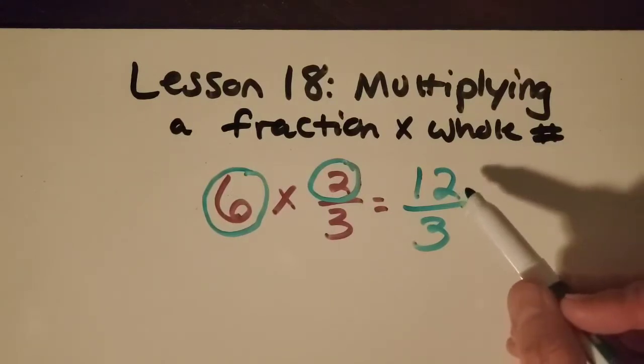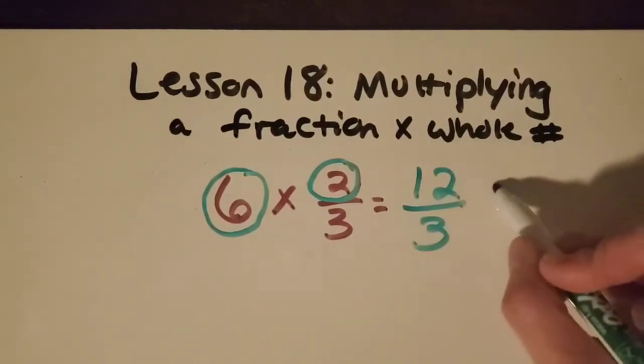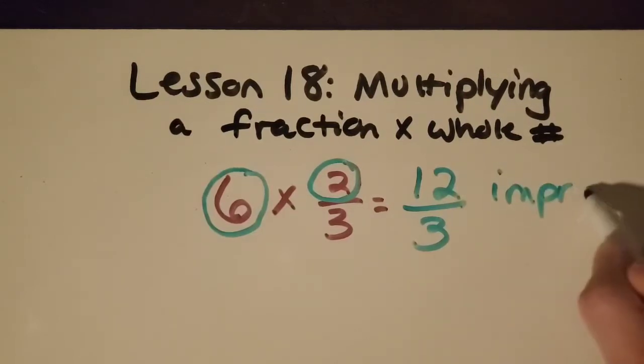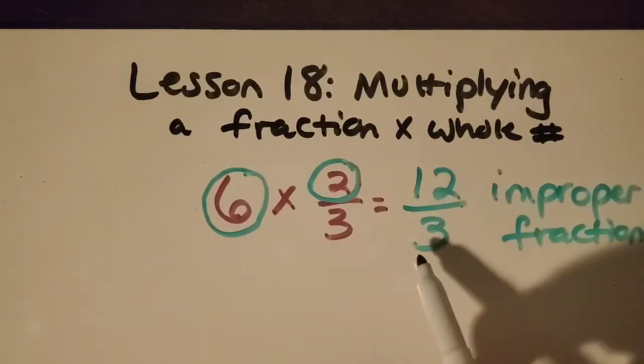So six times two is twelve. And then I'm going to keep the same denominator. Now in this case, my answer is an improper fraction. So that means that the numerator is bigger than the denominator.